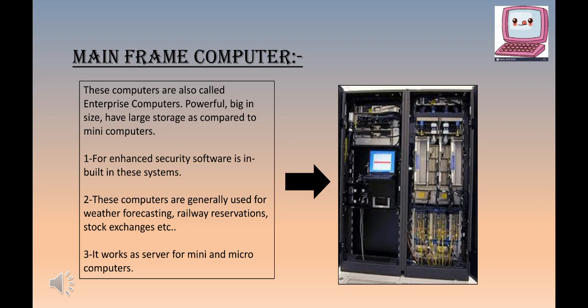Enhanced security software is built into mainframe systems because they hold a very large amount of data that must be kept secure. These computers are generally used for weather forecasting, railway reservations, stock exchanges, and similar purposes. As you can see in the image, only experts are able to use this technology. For weather forecasting, railway seat availability, and stock market calculations, these computers handle massive amounts of data and work very fast.